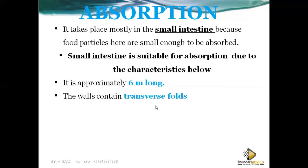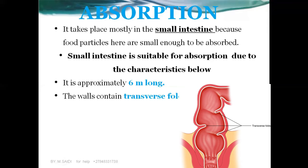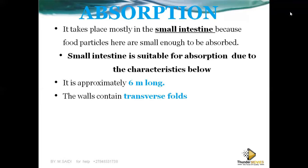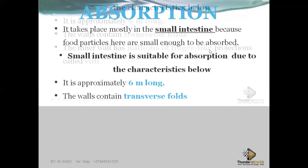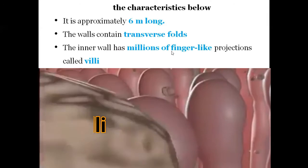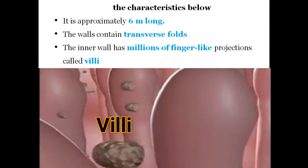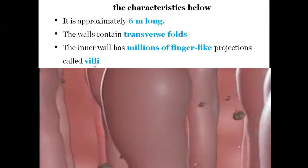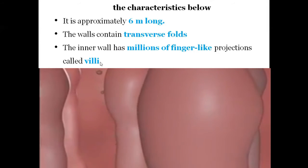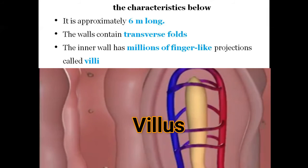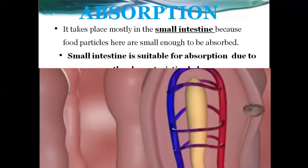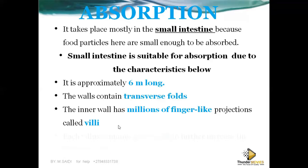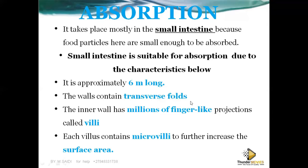The walls of the small intestine contain transverse folds, and the inner wall has millions of finger-like projections called villi. The villi protrude outward. A single one is called a villus; many are called villi. These millions of projections increase the surface area for absorption.